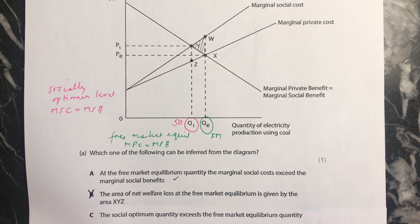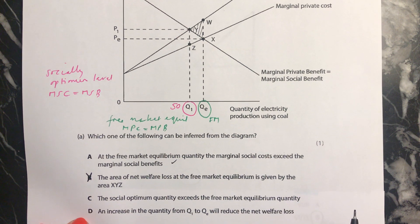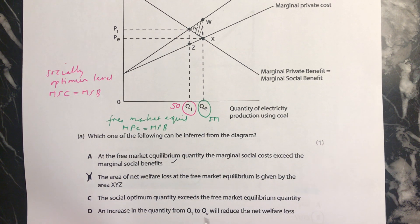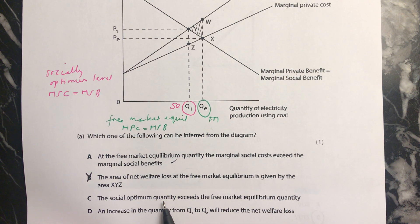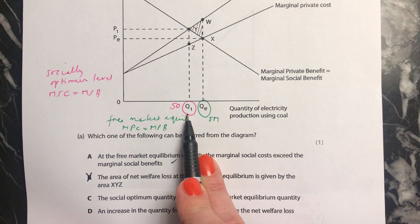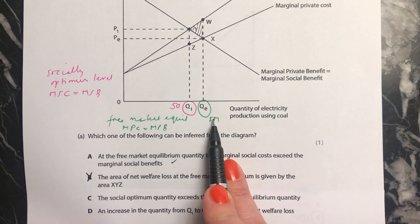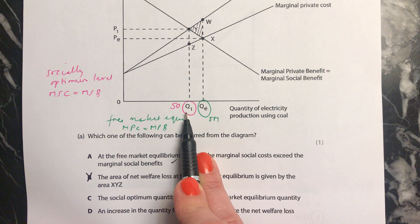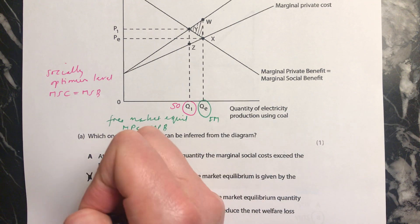Next one: the social optimum quantity exceeds the free market equilibrium quantity. The social optimum quantity is here — exceeds, meaning greater than, the free market? No, it's not. It's less than the free market quantity. So that's wrong.